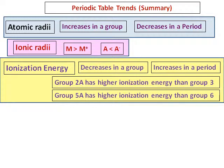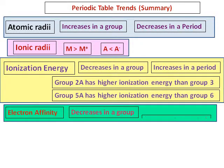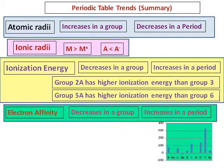There are some discrepancies in ionization energy. Group 2A has higher ionization energy than group 3A, and group 5A elements have higher ionization energy than group 6A. Remember these two when you are predicting ionization energy. The fourth trend is electron affinity.